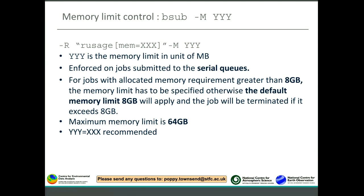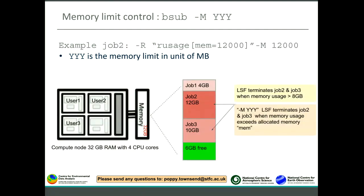With memory usage, you also need to specify memory control limits — this is especially important for jobs submitted to the CLI queues. For example, if a job uses 12 GB of memory, you must set the limit at 12 GB. If you don't set the limit to match the usage, LSF will terminate the job even if it has an allocation of 12 GB. So the memory control limit must equal the same value as the usage.